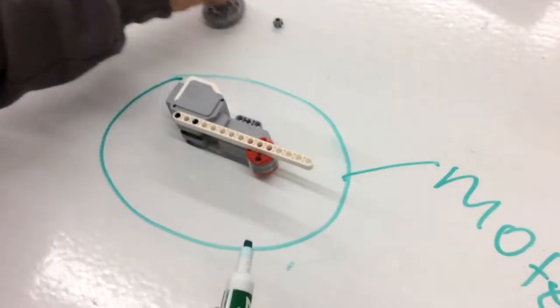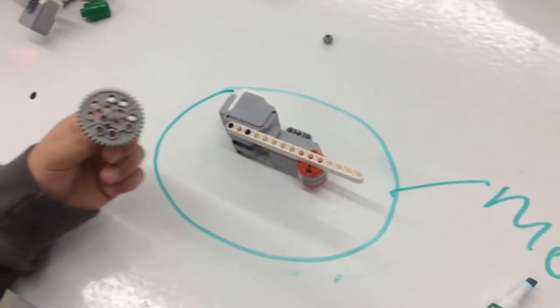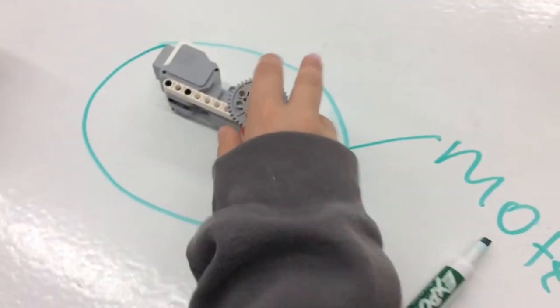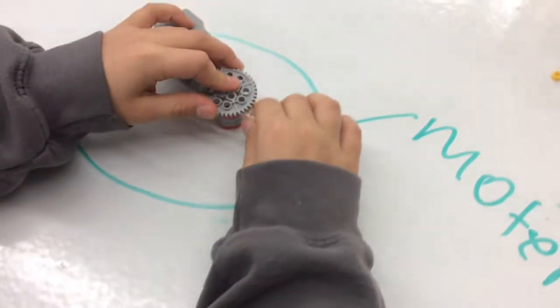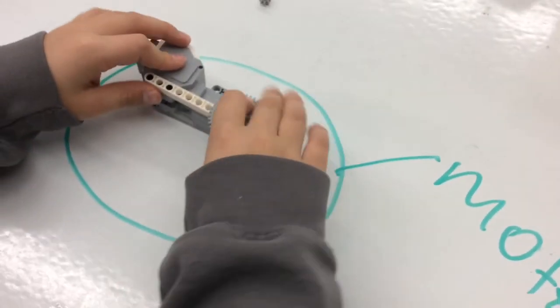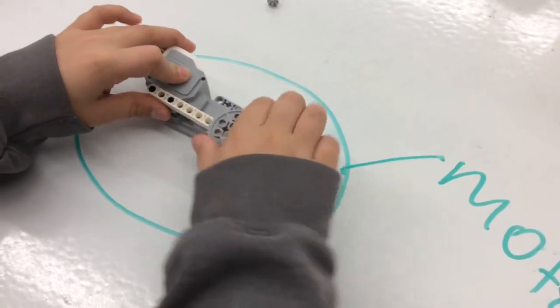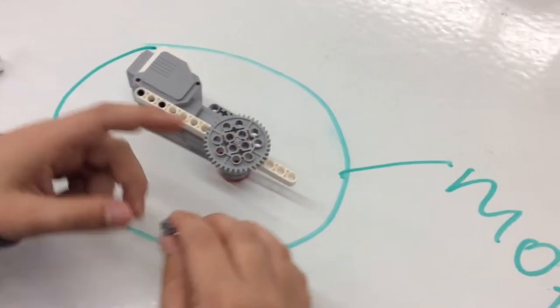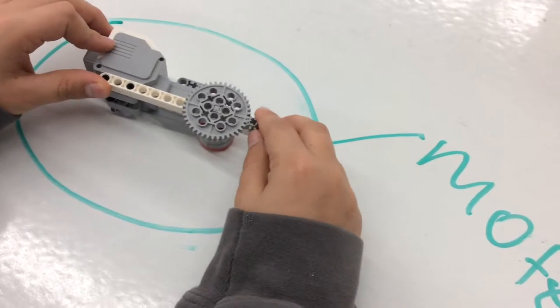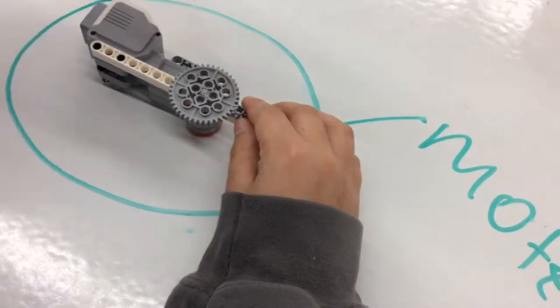So this is the input gear. This is the gear that we put in right here. Here, let me show you that. And what it does is it spins like this. And then we've got the output gear right here, which is connected to the wheel.